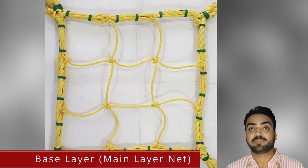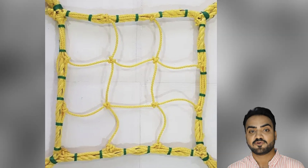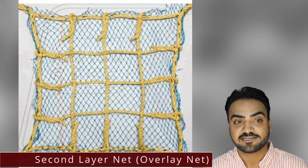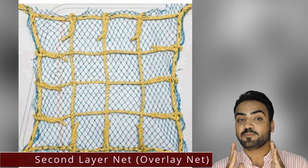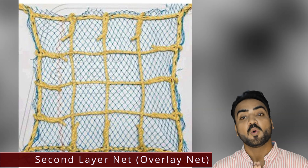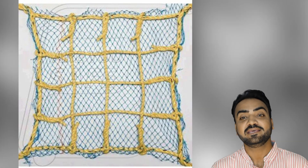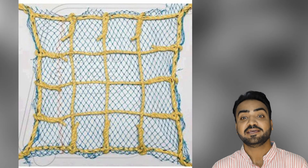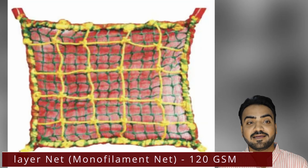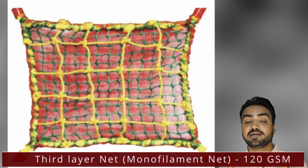The base layer of a safety net is called the main net. Its purpose is to arrest the fall. The second layer is called the secondary net, or material/debris arrest net — also called the overlay containment net or SDPA material net. It is UV-stabilized and typically blue in color.